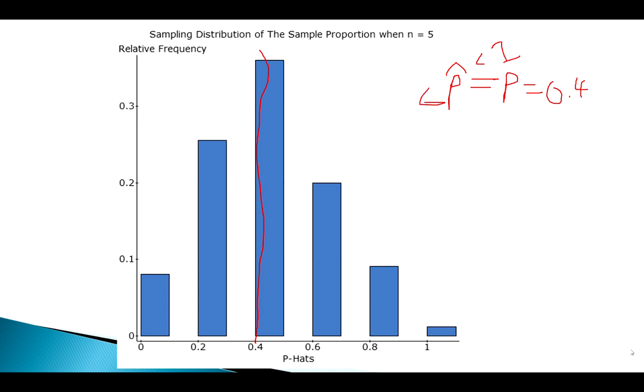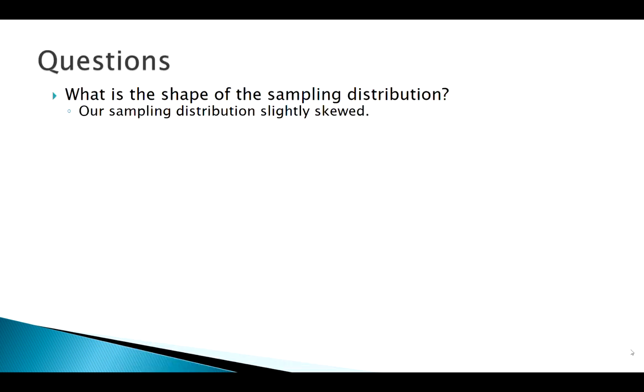So what about our spread? So the spread, p-hat, could be anything from 0 to 1. A proportion or a probability could be anything from 0 to 1. We've got approval ratings of 0 down here. We've got approval ratings of 1 or 100% up here. So the spread of this is pretty big.